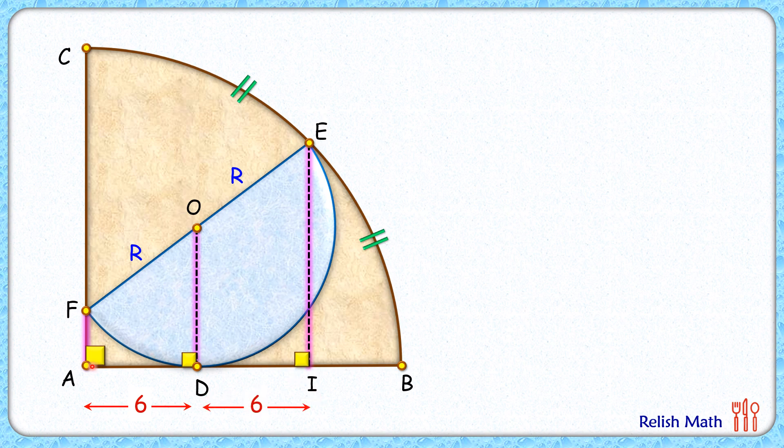Now from A let's join point E here. As these arcs CE and EB are equal in length, this angle here will be half of 90 degrees or 45 degrees.